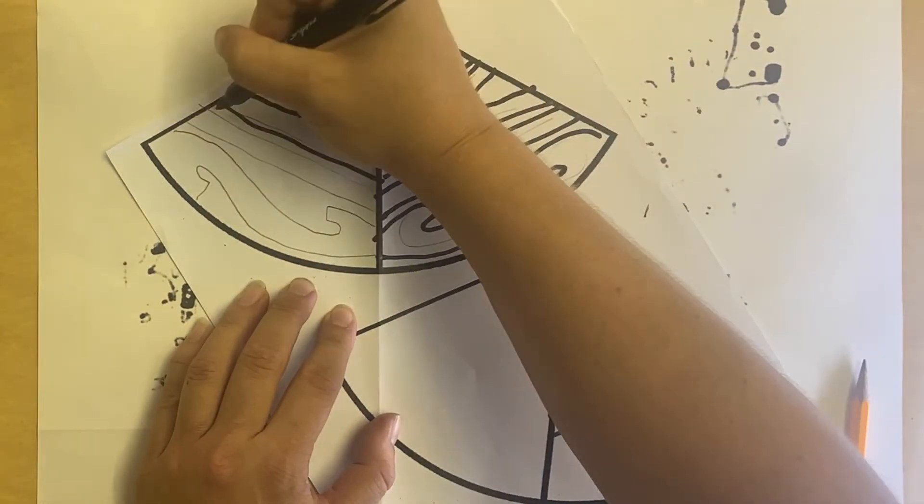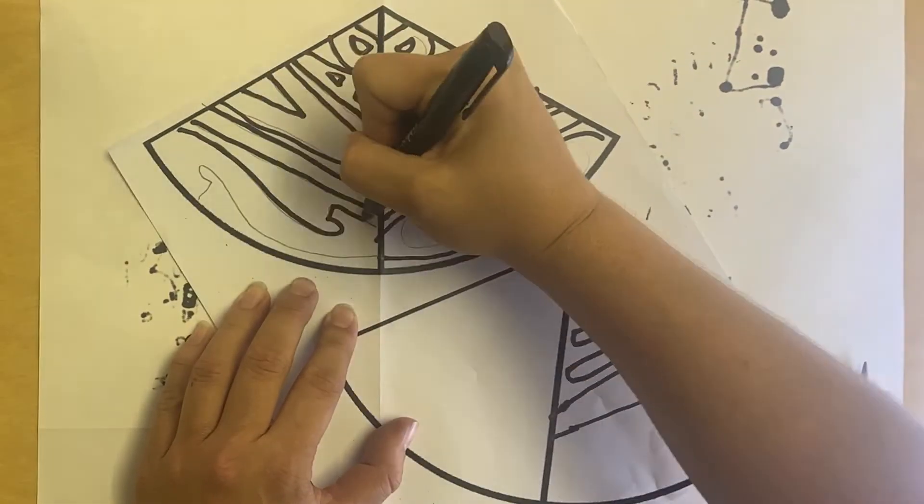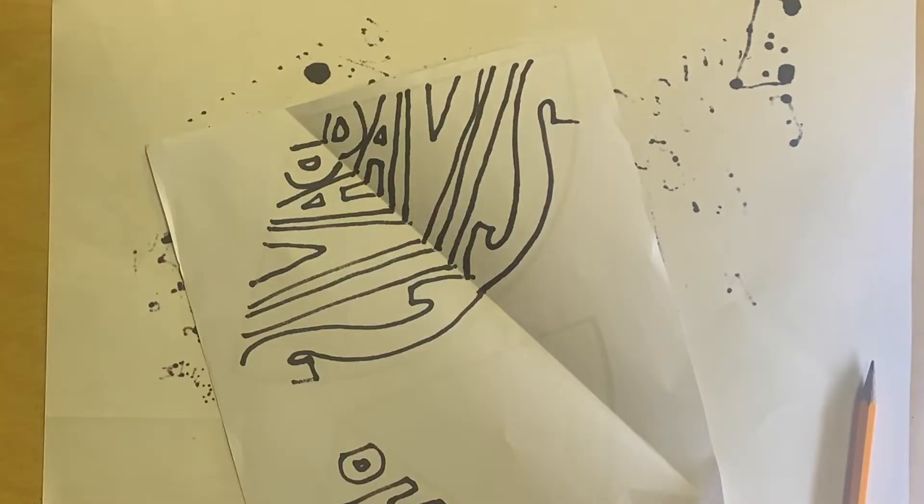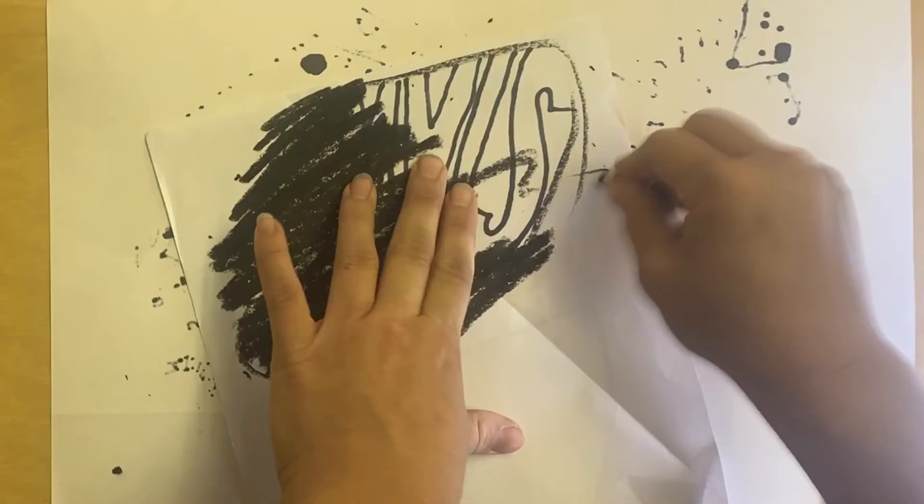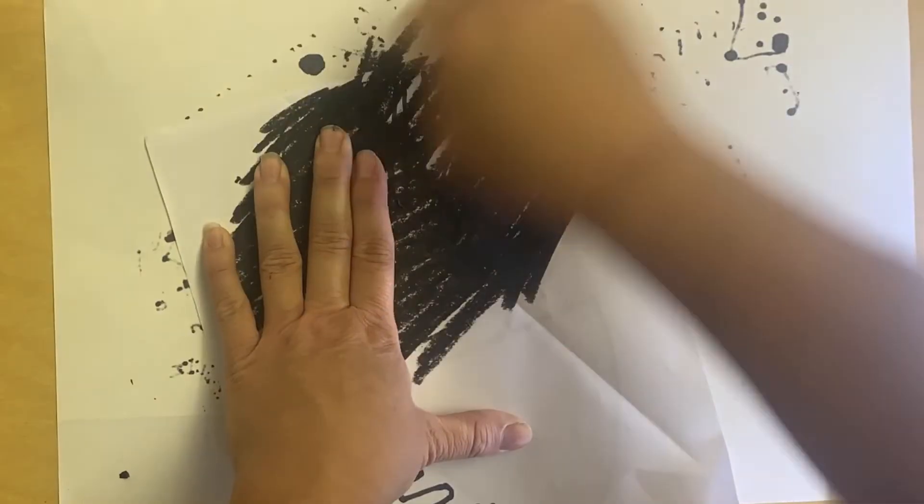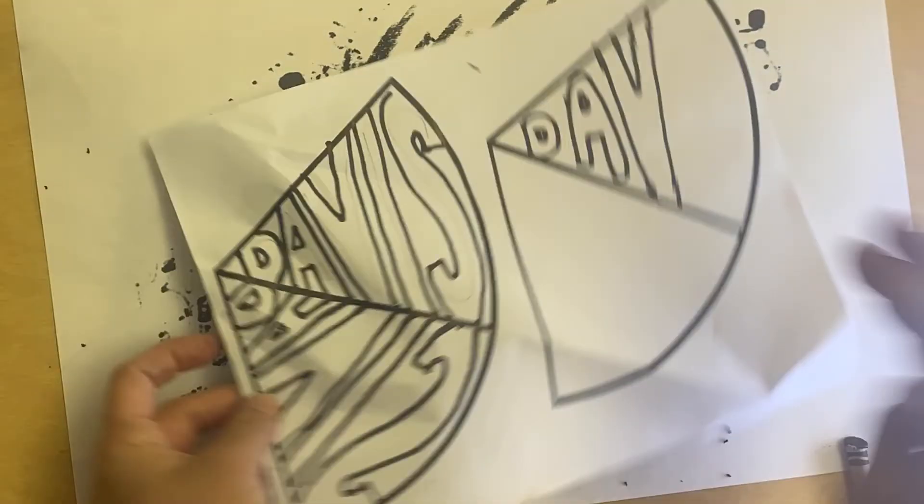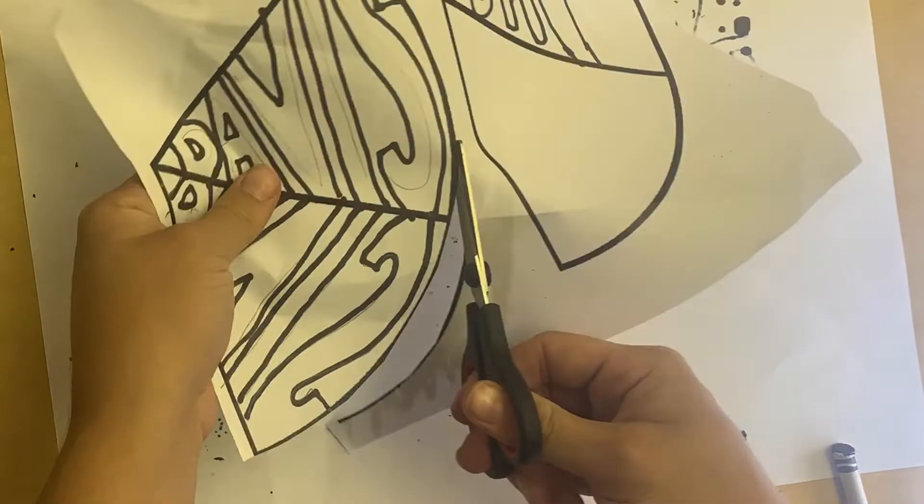After highlighting the lines and making sure that they connect, I'm going to flip it over on the back and color with crayon. I can kind of see where I need to color and I'm just going to press really hard with the black crayon. This is how we're going to transfer.